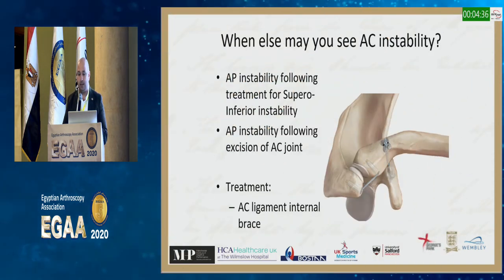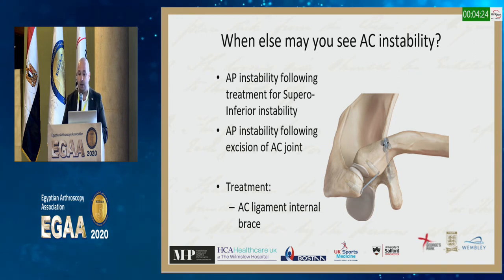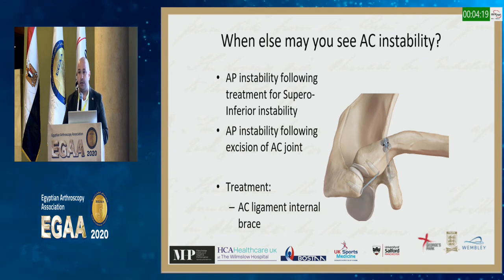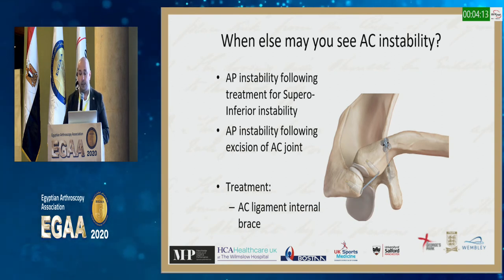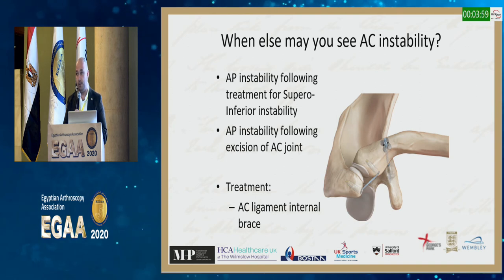Sometimes we augment for AP instability, particularly if we've excised the distal clavicle. We've adopted a procedure where we place an internal brace across the acromioclavicular joint — a simple FiberTape with two SwiveLock anchors — which corrects any AP instability. We've had a handful of cases where this corrected persistent AP instability following primary AC excision or as part of CC ligament reconstruction.